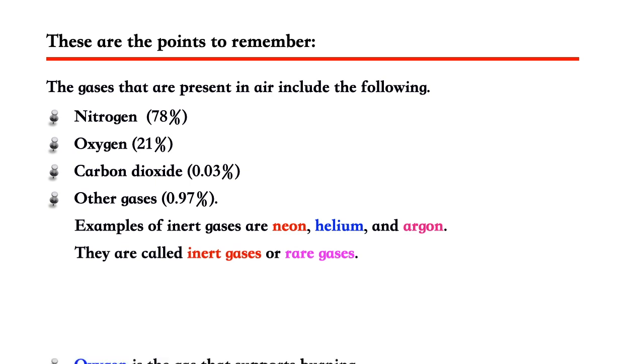Examples of inert gases are neon, helium, and argon. They are called inert gases or rare gases. Oxygen is the gas that supports burning.